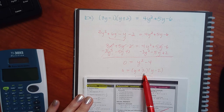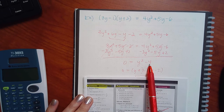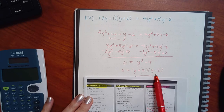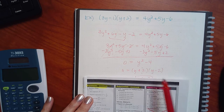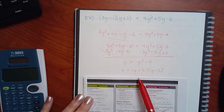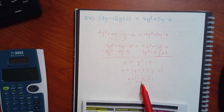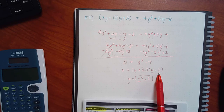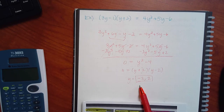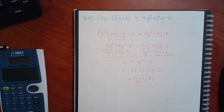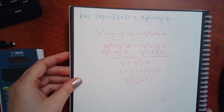That's a difference of perfect squares, so we get (y + 2)(y − 2). y times y is y², and 2 times 2 is 4, with one plus and one minus. Setting each factor equal to 0, this one gives you negative 2, and that one gives you positive 2. Good, good, good.